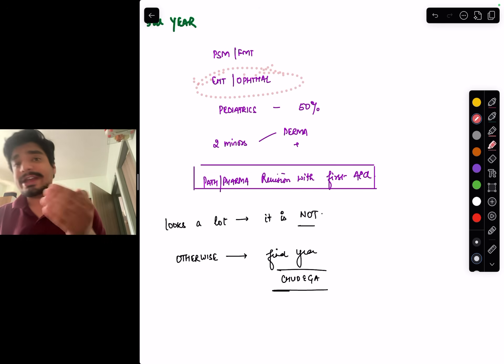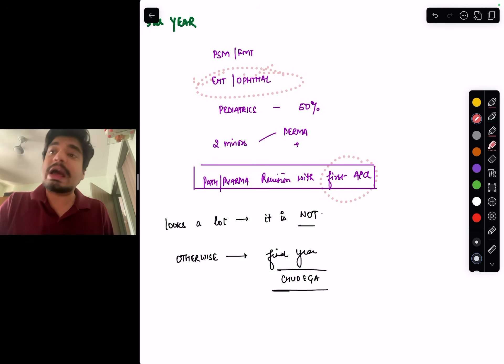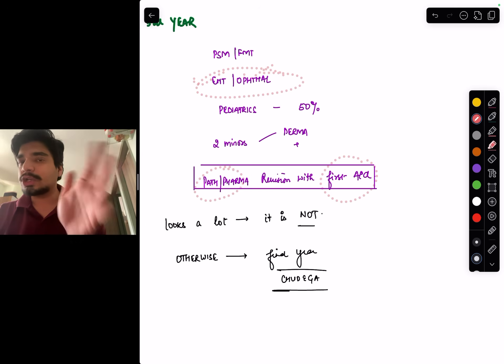Path Pharma, you have already revised. We are already done in the second year. So, your concepts are already there. And you have to revise it with first aid. How to use first aid, how to use first aid for first and second prof will be covered in the next video. This looks a lot. It is not. You have to do some portion of fourth year in the third year itself. Otherwise, fourth year will be very tough. And the reason I keep on emphasizing Path Pharma revision is because medicine will become very easier. And I will talk about when I talk about how to go about in fourth year. This is from my side today. Thank you and have a nice day.